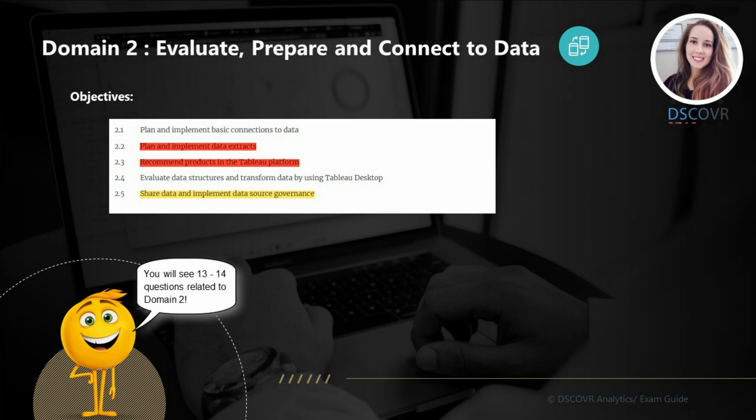Almost half of your questions for Domain 2 are going to come from subsections 2.2 and 2.3, and I personally found these subsections to be quite challenging. So in this exam review, we are going to be focusing on most of the questions that come from these two subsections. For subsection 2.5, you may see one or two questions related to sharing and permissions in Tableau, as well as data source governance. You should be able to describe how you would share a workbook or dashboard with a specific group of users on a Tableau site, and also describe what a certified data source is.